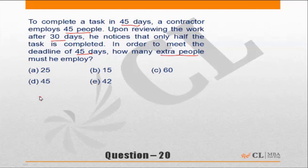So the contractor thought that in 45 days, 45 men would be able to complete the work. However, he finds that in 30 days, 45 men have done only half the work. This is what he planned for, this is what really happened. This was his assumption, this is the reality.